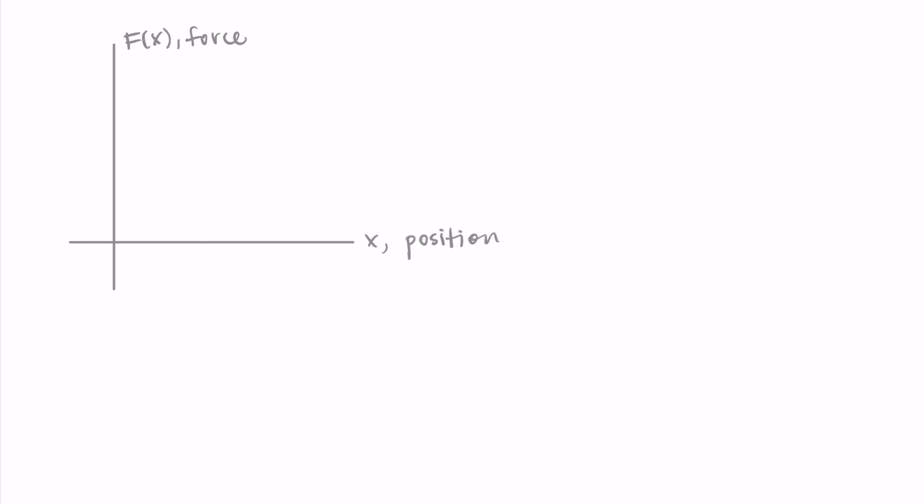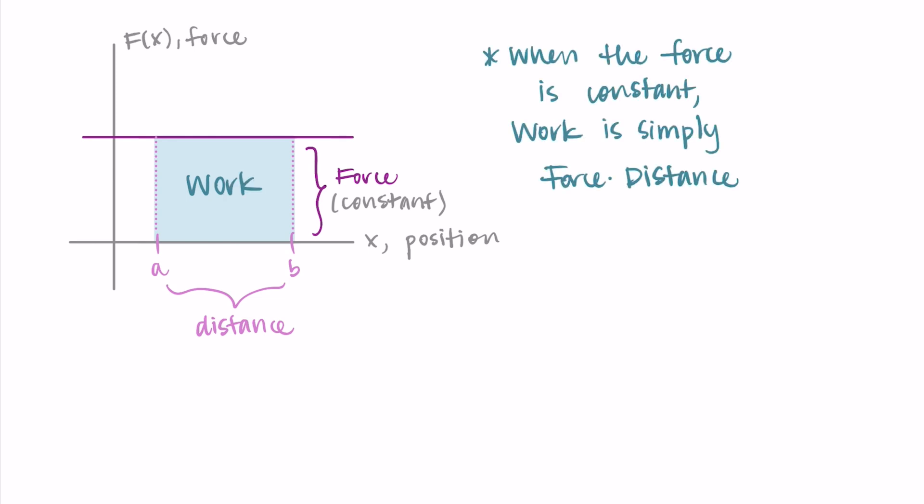If I graph axes with x as position on the horizontal axis and force on the vertical axis, let's first look at a case where the force is constant. It's a horizontal line, so the force is the same regardless of position. If we look at the force over an interval from a to b, when the force is constant, the work is simply force times distance.